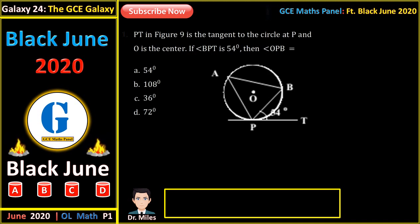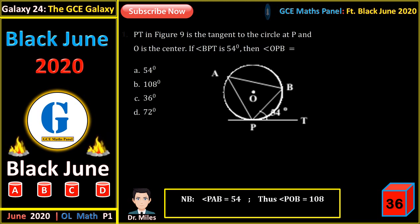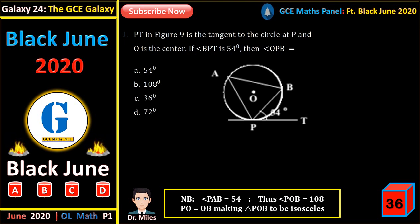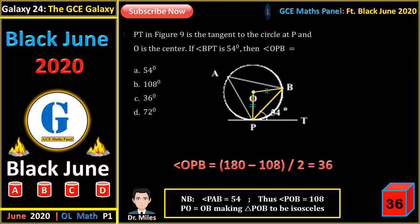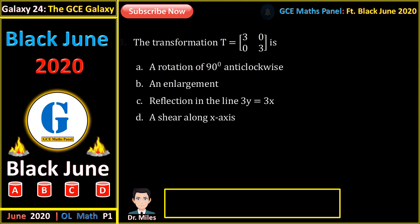PT in the figure is the tangent to the circle at P, and O is the center. If angle BPT is 54 degrees, find angle OPB. PB is a chord which subtends an angle at the circumference of 54 degrees. From circle theorems, the angle at the center will be 108 degrees. Since PO equals OB, triangle POB is isosceles. The angle at P equals the angle at B, and this angle is given by (180 minus 108) divided by 2, which gives us 36 degrees for angle OPB.